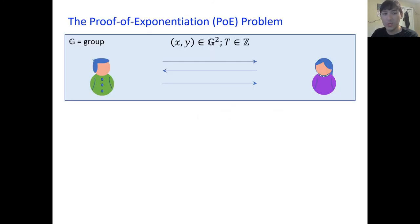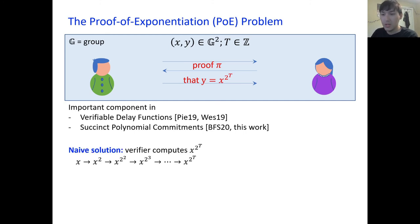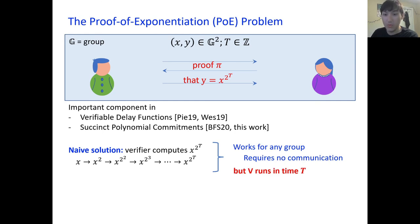The PoE problem specifies a group G, two elements X and Y in the group, and an integer T — all this information is public. We want an interactive or non-interactive protocol that produces a proof pi which attests that X to the 2 to the T equals Y. PoE is a very important component of VDFs and succinct polynomial commitments. The naive solution has the verifier just compute X to the 2 to the T, which works for any group and requires no communication, but the verifier runs in time T. So can we achieve sublinear verification?